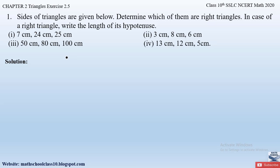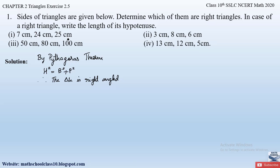By Pythagoras theorem, if a triangle is a right-angle triangle, the hypotenuse square is equal to the base square plus the perpendicular square, and therefore we can say the triangle is right-angled. Since they have given us all three sides of a triangle, let us substitute the values and find out whether hypotenuse² = base² + perpendicular². Let us draw a right-angle triangle ABC, where BC is the hypotenuse (the longest side), AC is the base, and AB is the perpendicular.